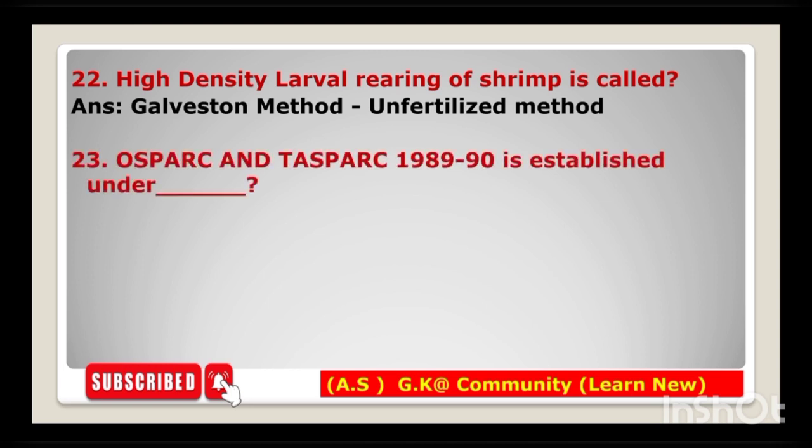Next question: OSSPARC — Orissa Shrimp Seed Production and Research Center — and TASPARC — Andhra Pradesh Shrimp Seed Production and Research Center — established in 1989-90 under which authority? The answer is MPEDA.